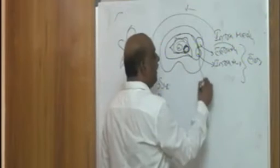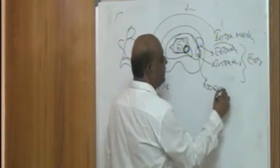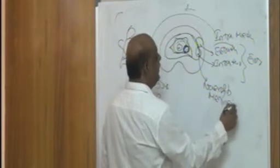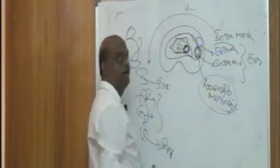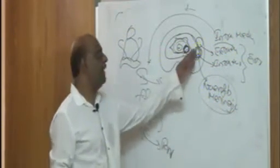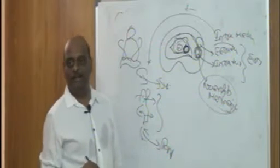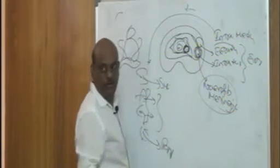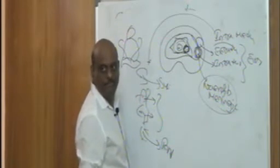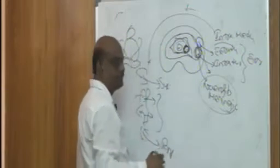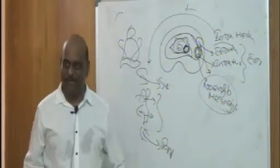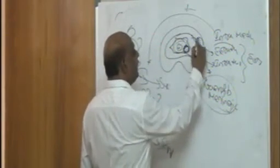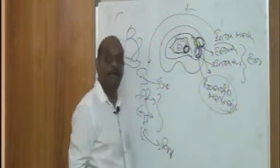Neurofibromas and meningiomas typically arise from the dura and are most often extramedullary intradural in location. For extradural lesions, the typical cause is metastasis — whenever a tumor reaches the spinal cord, it is stopped by the dura and remains in the extradural space.